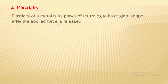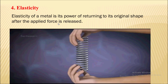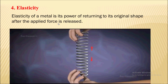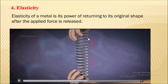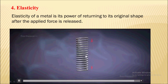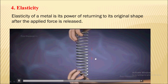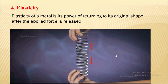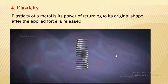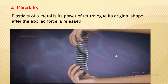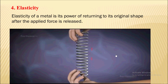Next is elasticity. Elasticity is a property of a material due to which it will regain its original shape when the load is removed. Here you can see that after the load is removed, this spring gets back to its original shape. Mild steel, aluminium, and copper are examples of elastic materials.